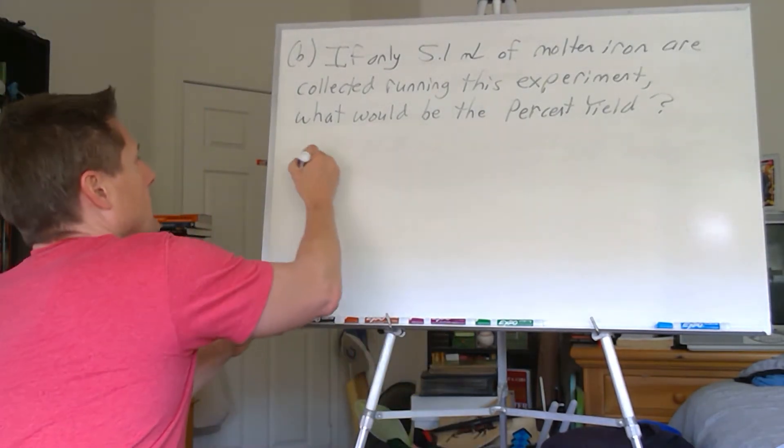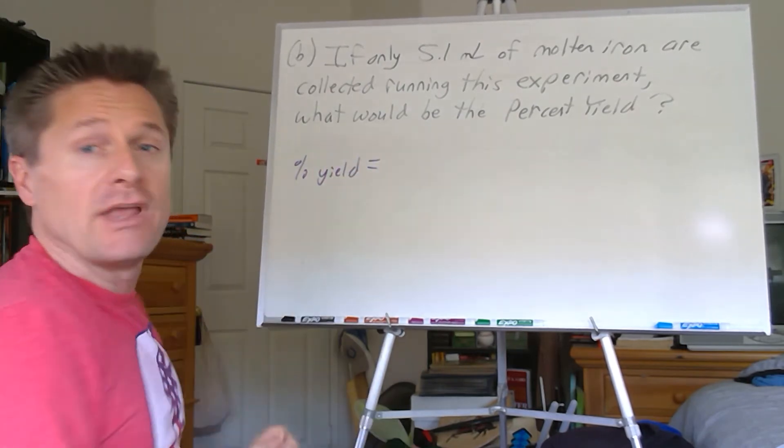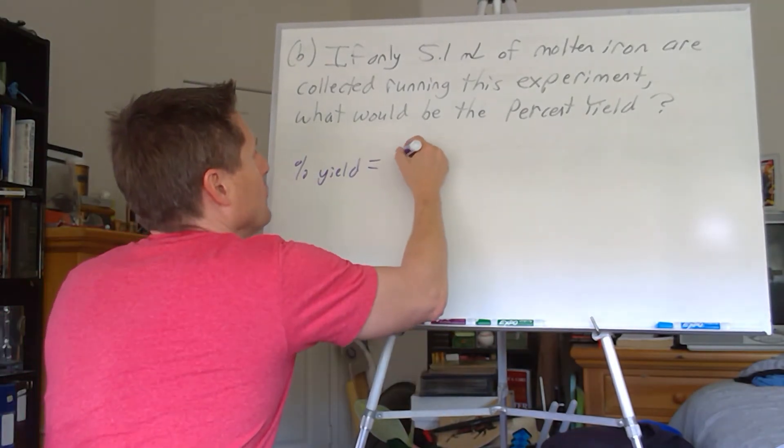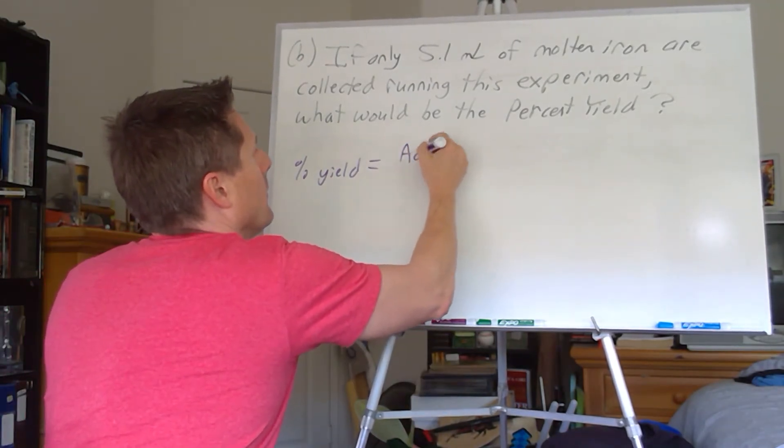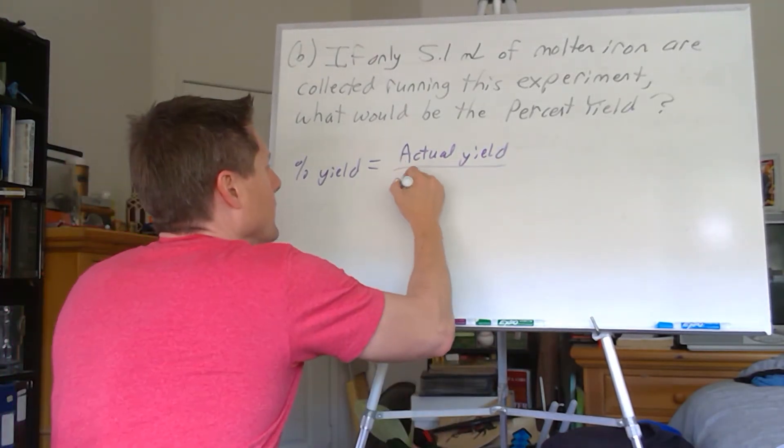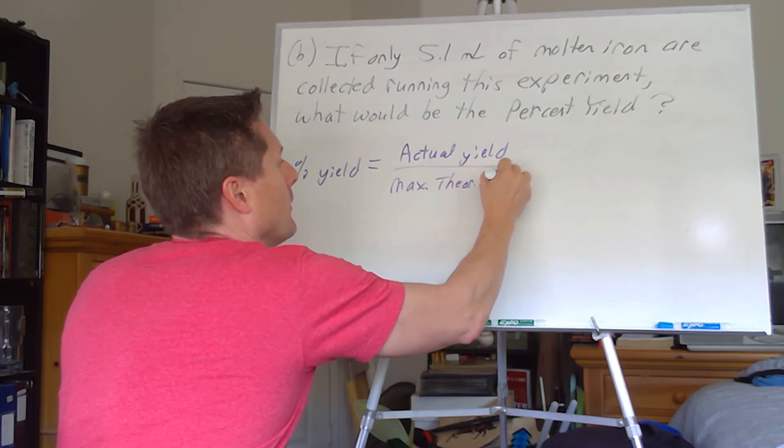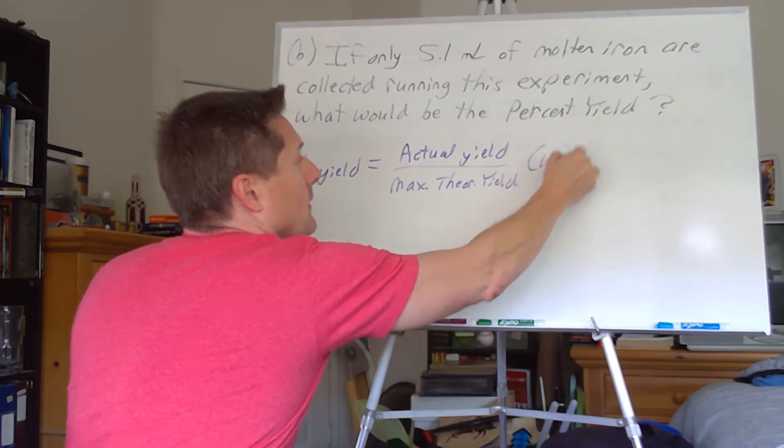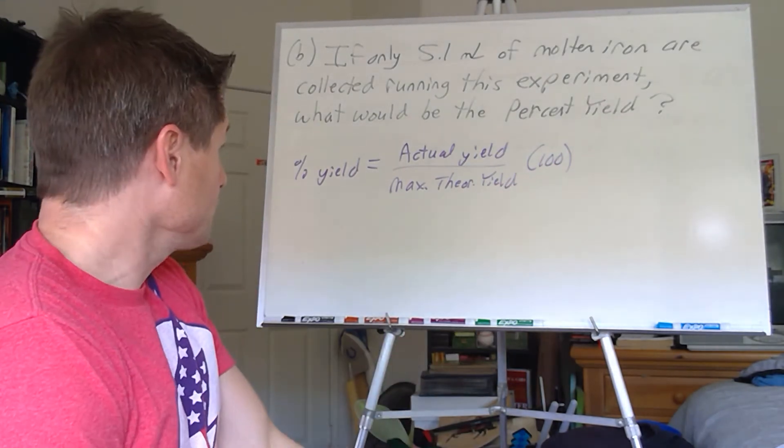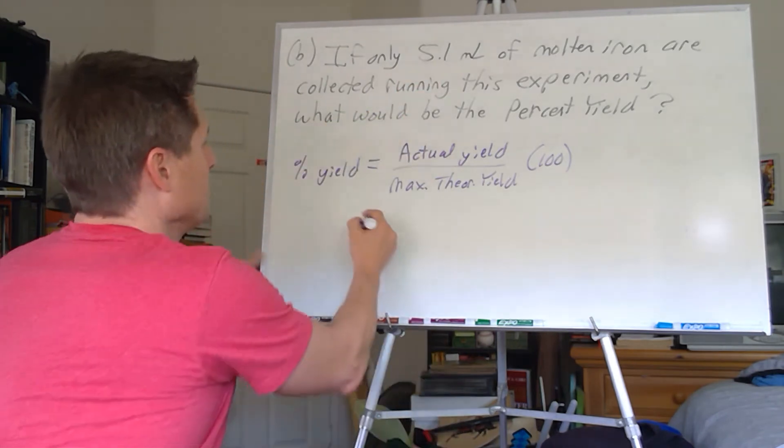Let's write down our equation. Percent yield is what you got over what you're supposed to get. That's your actual yield over the maximum theoretical yield times that by 100 to convert that fraction into a percent. Let's get our values. The actual yield was provided to us, so that's going to be 5.1 milliliters. That's what we collected.